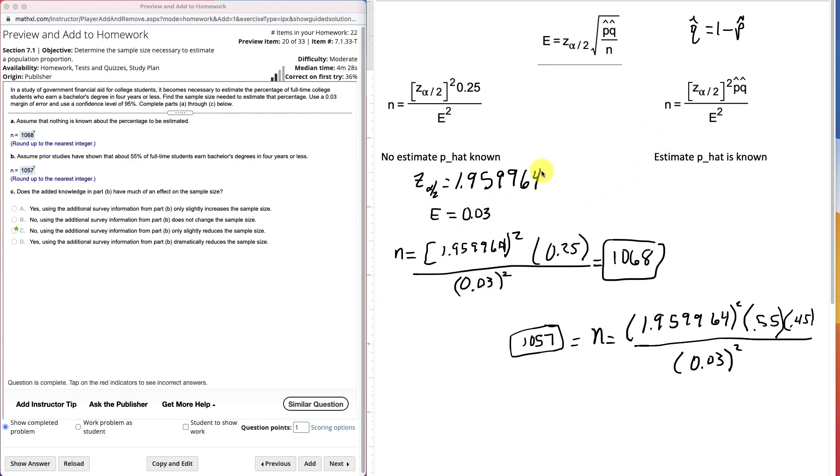So that's how you're going to find the sample size that's required to estimate a population proportion. If there are any questions on this, please post in discussion.